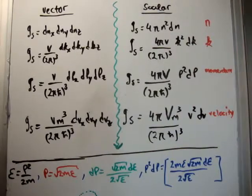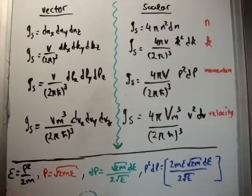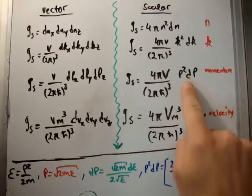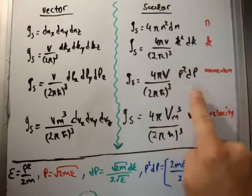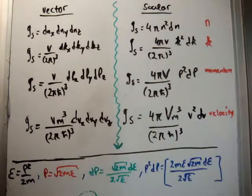So let's go ahead and do that. We know that E is equal to p squared over 2m. So we look at the expression for the density of states in scalar momentum space, and we see that it only depends on p squared dp. So we need to get p squared dp in terms of energy. So here's p, the square root of 2mE, pretty straightforward.